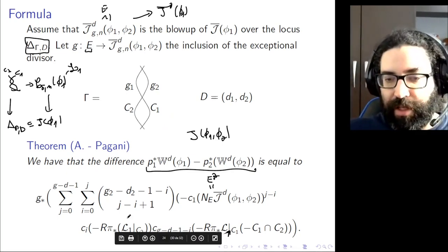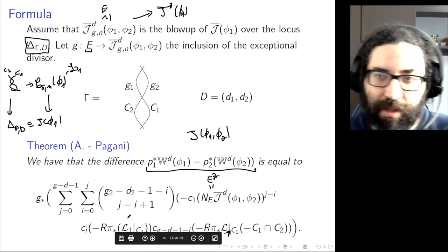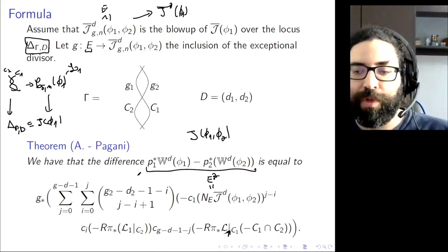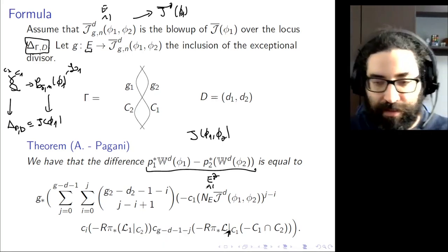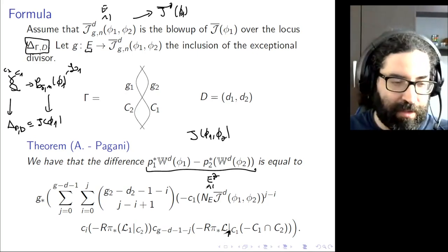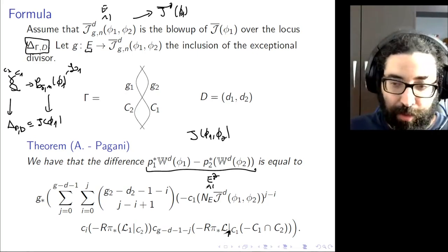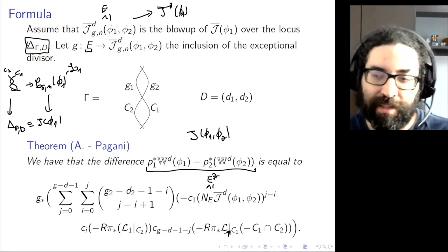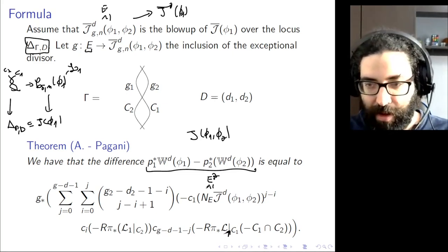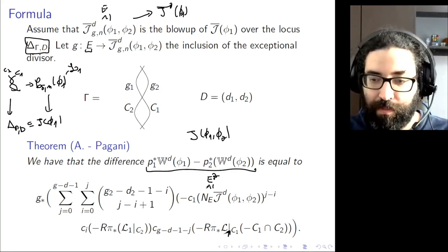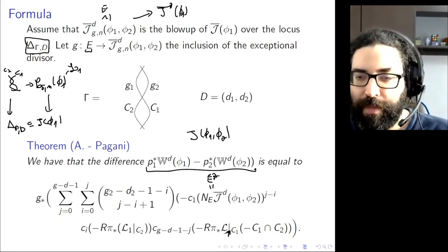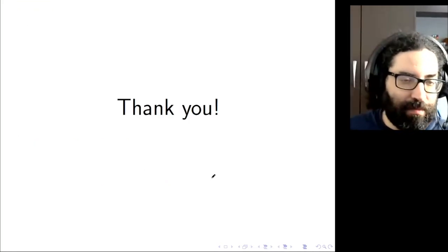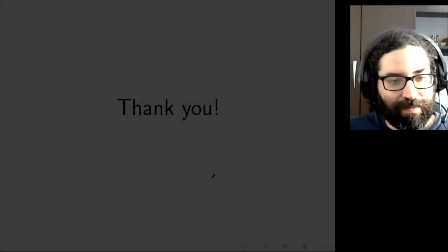To summarize, we can compute this difference and compare both Brill-Noether cycles when we have Jacobians for polarizations that are close to each other — adjacent across some wall. Thank you, that was my talk.